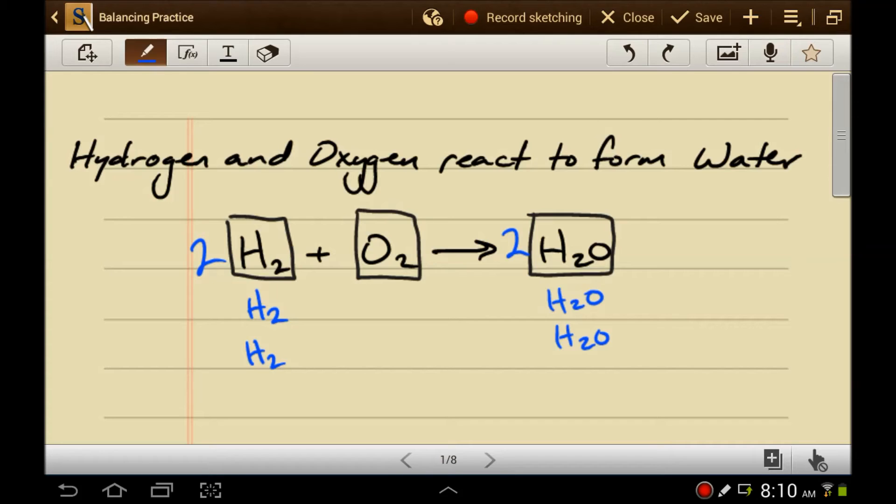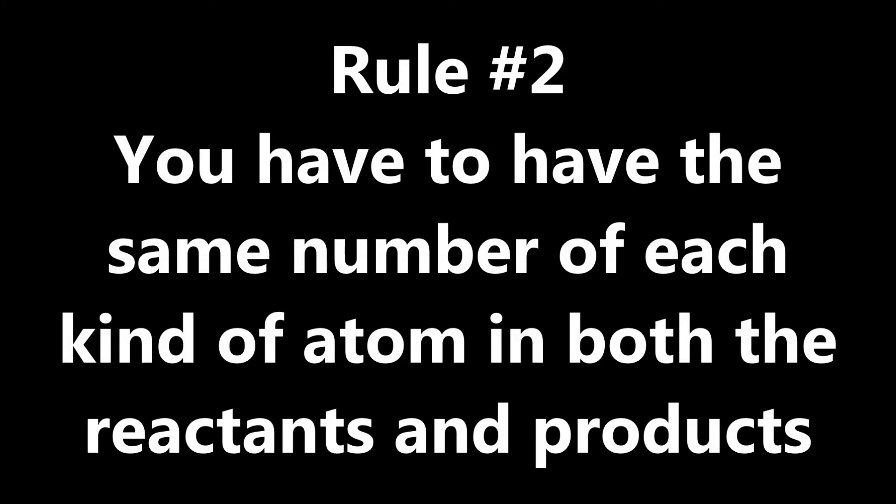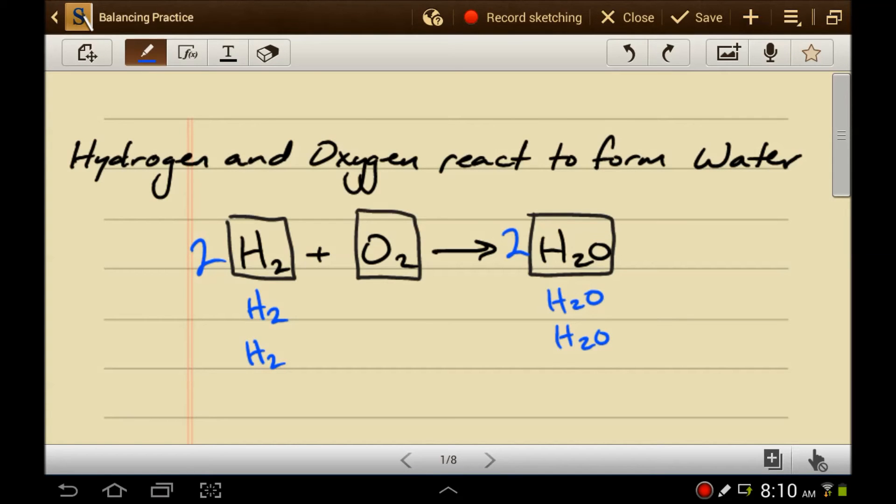Rule number 2, you're done when the reaction obeys the law of conservation of matter. So, once you have the same number and kinds of atoms on both sides of the equation, the equation is balanced. Let's look at another one.